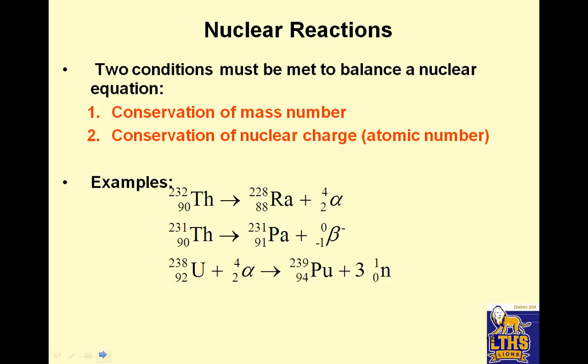Nuclear reactions. Two conditions must be met to balance a nuclear equation. The conservation of the mass number, that's the top number, and conservation of the nuclear charge, that's the bottom number.